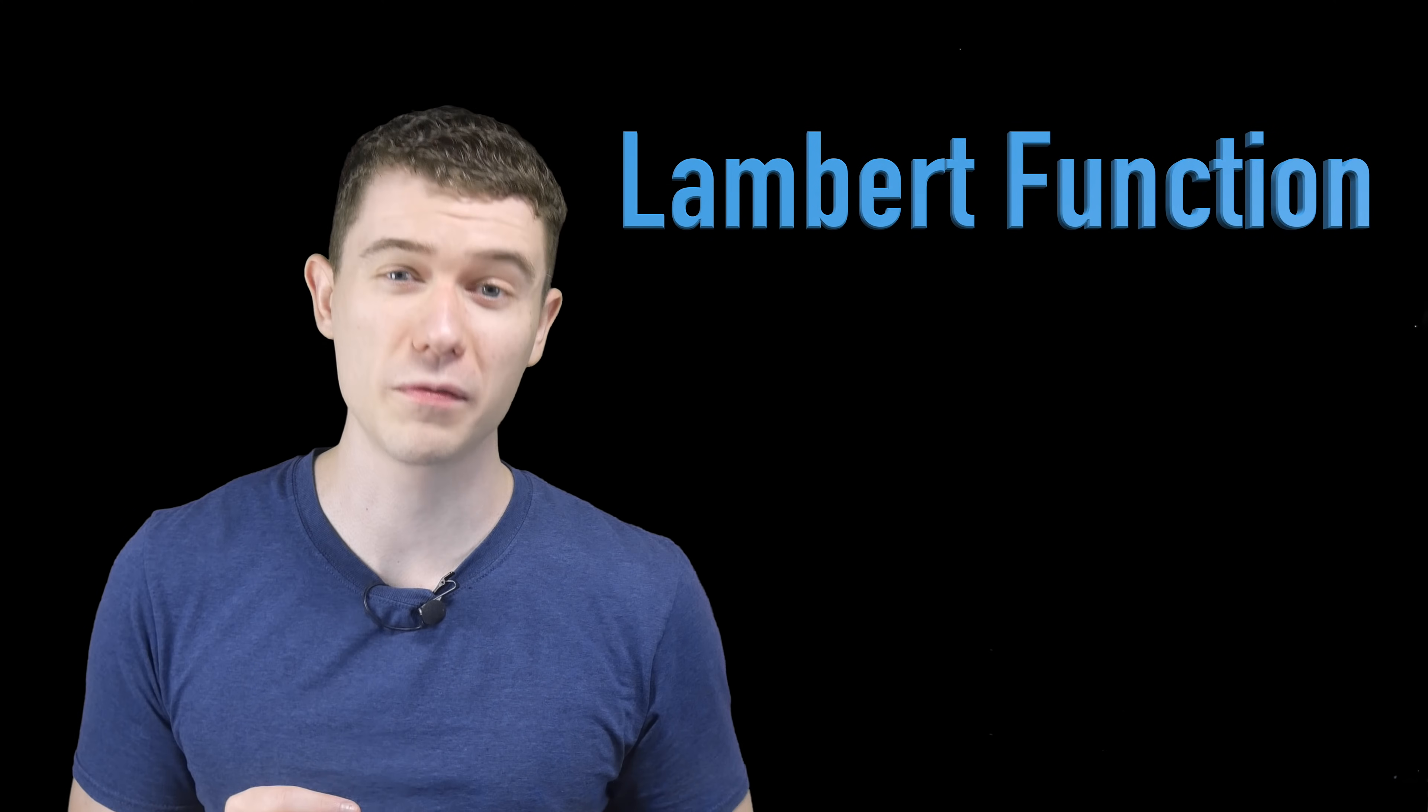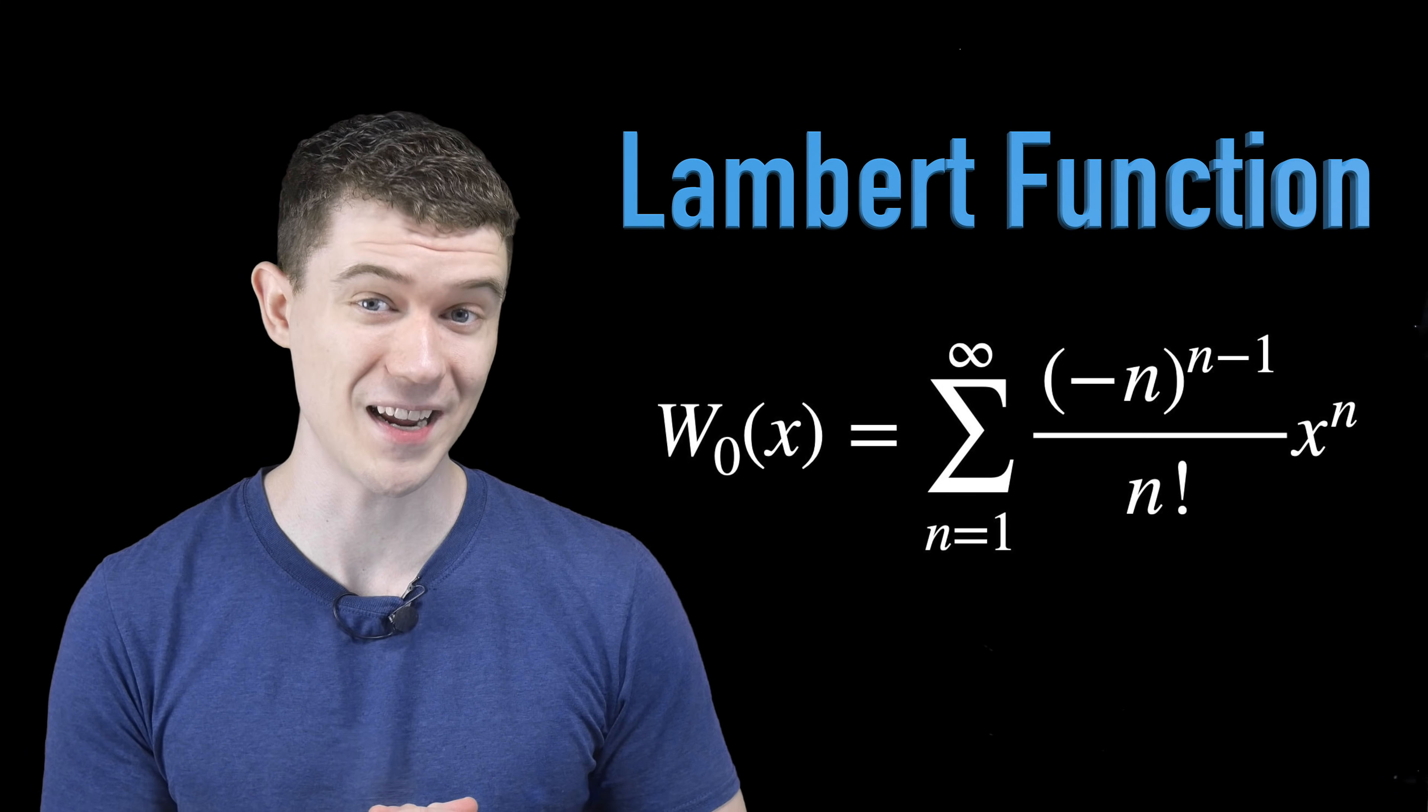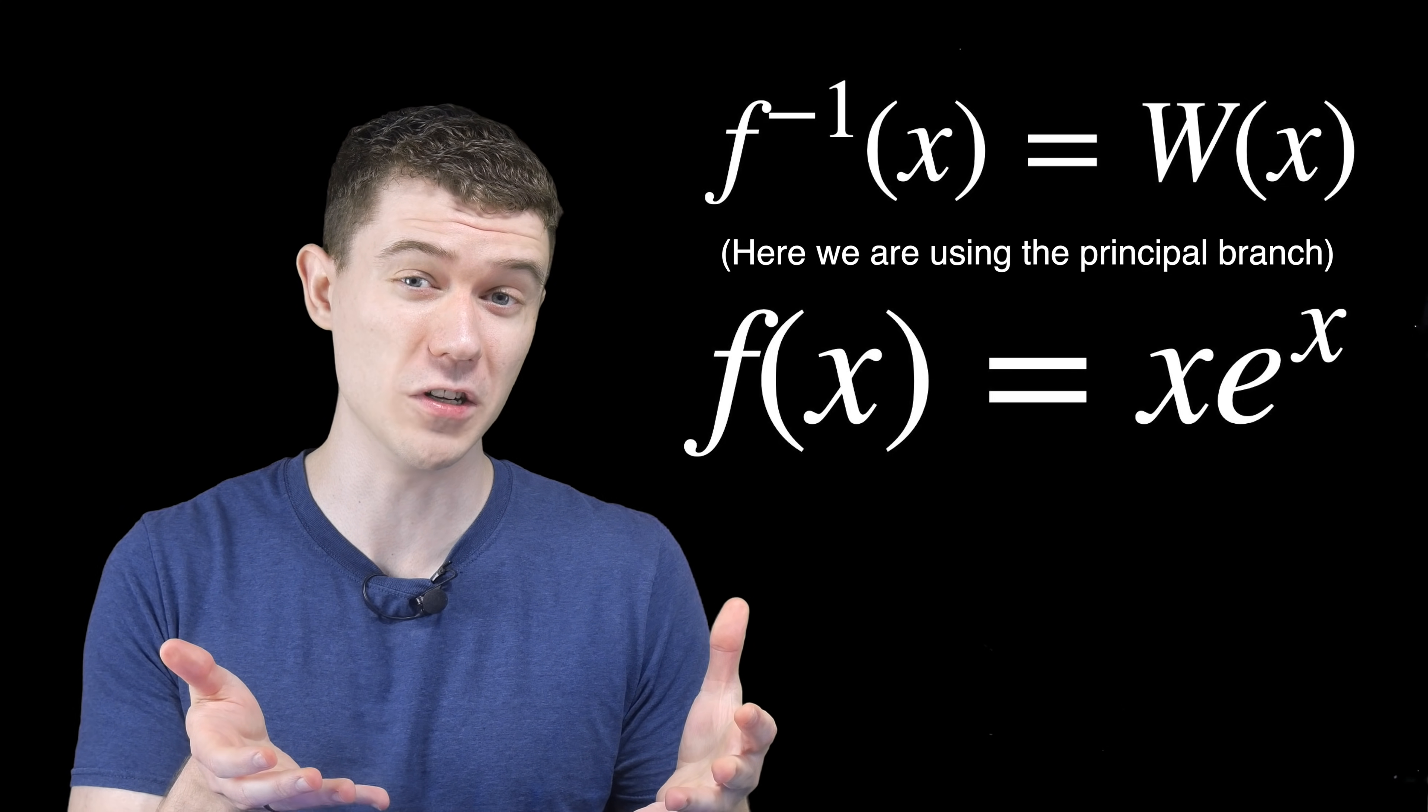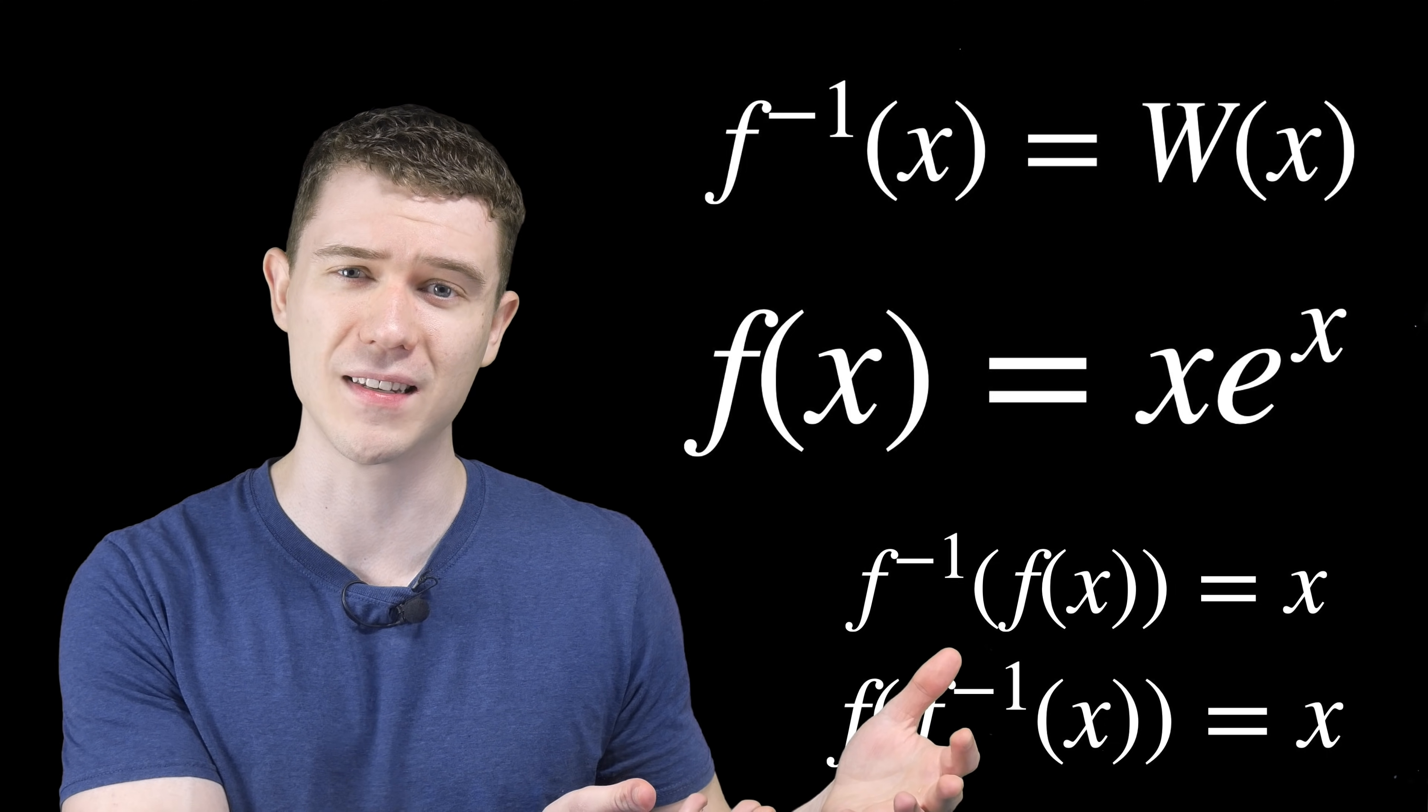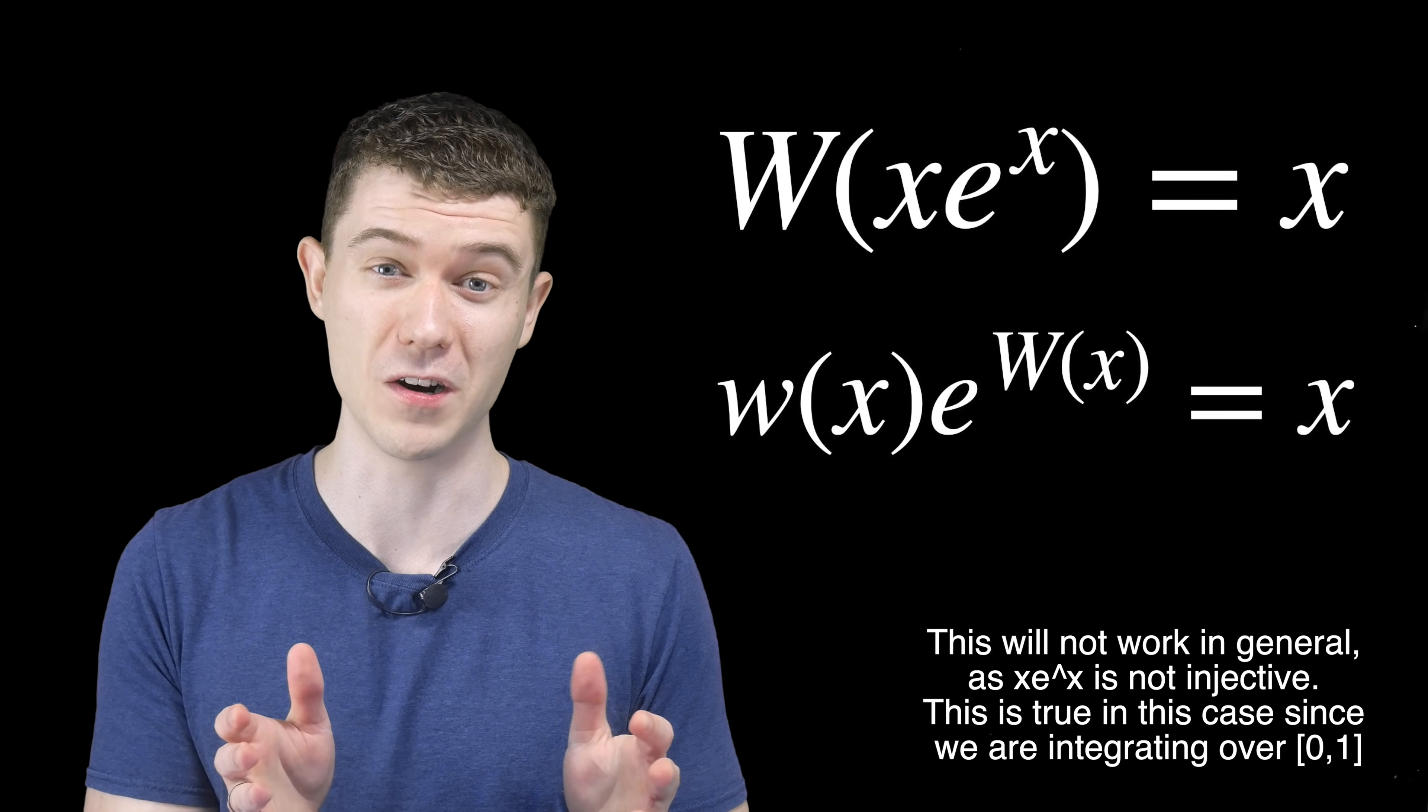The first tool we'll need is the Lambert function, usually denoted with a W. Here's its series representation. Why do we care about this? Well, the Lambert function is the inverse function to x times e to the x. And remember how inverse functions work? When we compose them either way around, they essentially undo each other and just spit out x. So when we compose W and x times e to the x either way around, we just get out x because they're inverse functions.